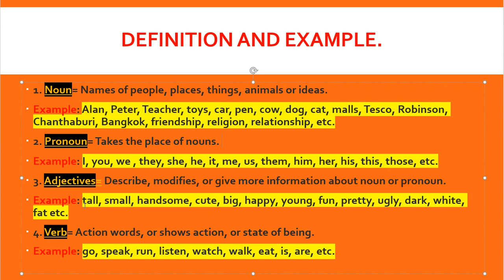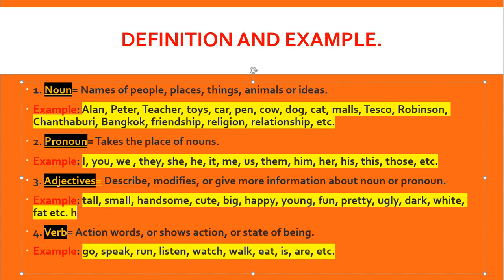Examples of adjectives: tall, small, handsome, cute, big, happy, young, fun, pretty, ugly, dark, white, and fat. For example: Habi is fat — so 'fat' is the adjective describing Habi. And Bia is cute — so what is Bia? He is cute. Cute gives more details about Bia — so that is Bia, the cute boy.